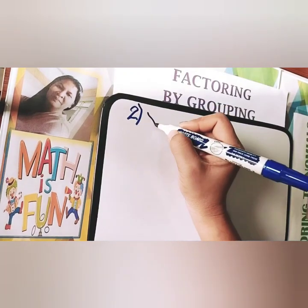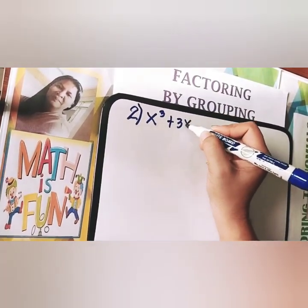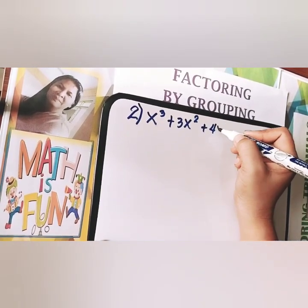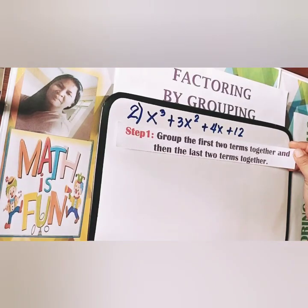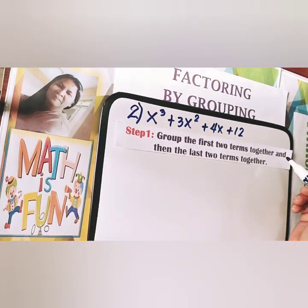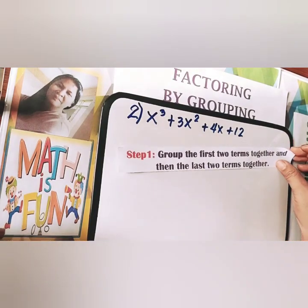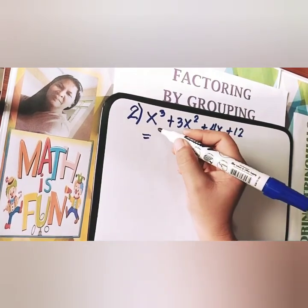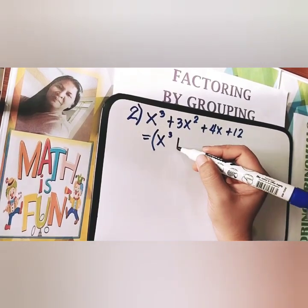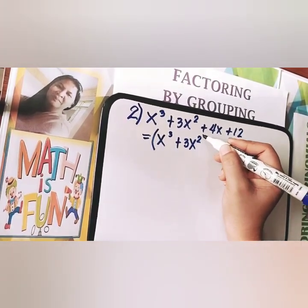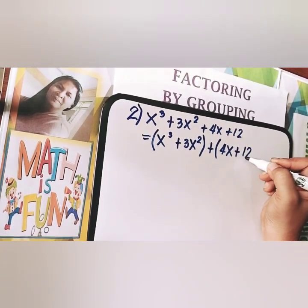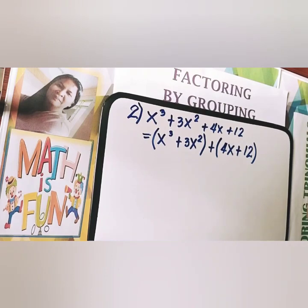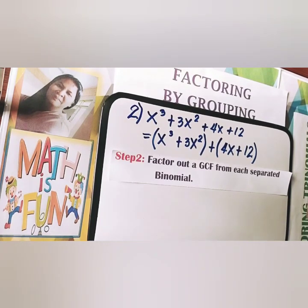Example number 2: x cubed plus 3x squared plus 4x plus 12. Again, let's follow step number 1 — group the first two terms together and then the last two terms together. So it will become (x cubed plus 3x squared) plus (4x plus 12).